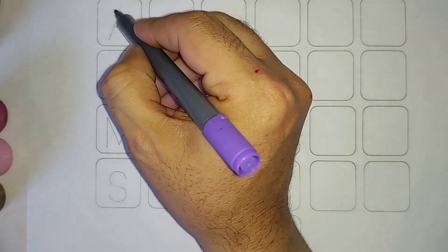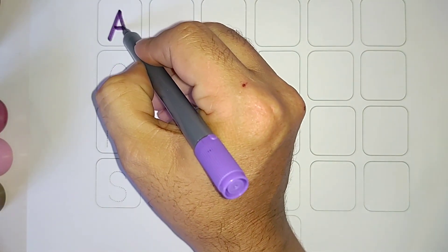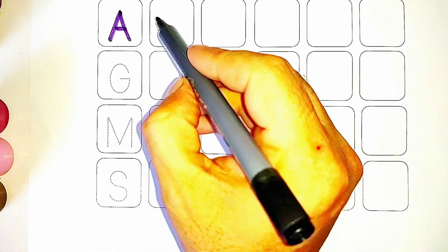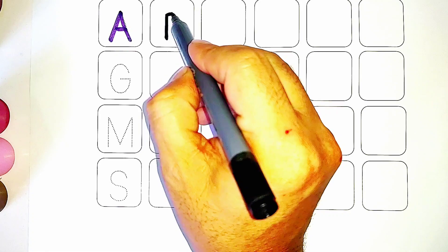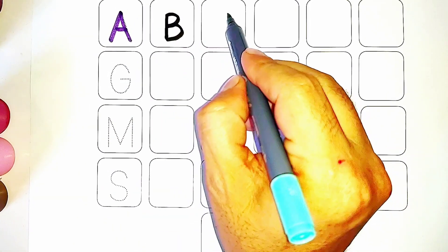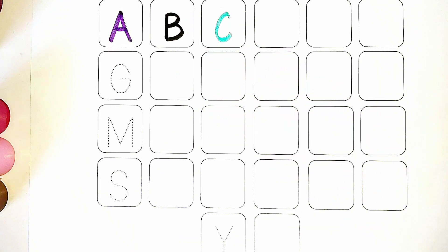A for apple, purple color. B for ball, black color. C for cat, sea green color.